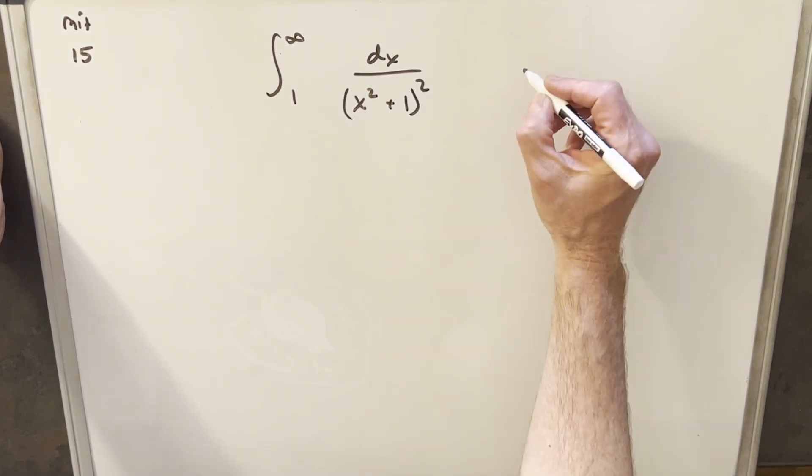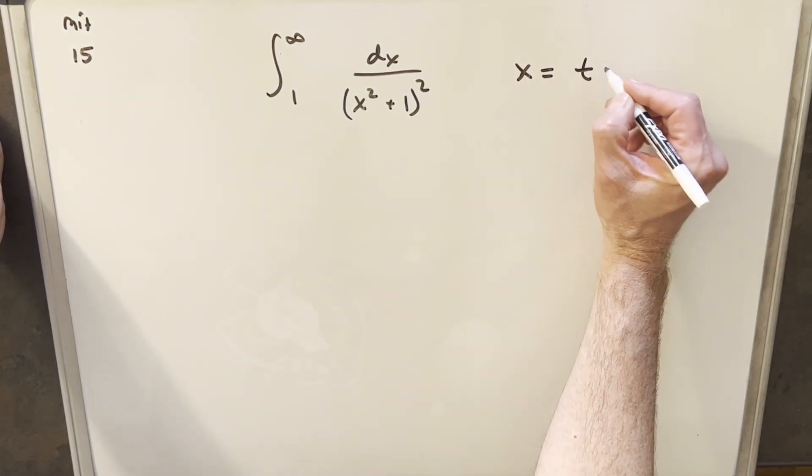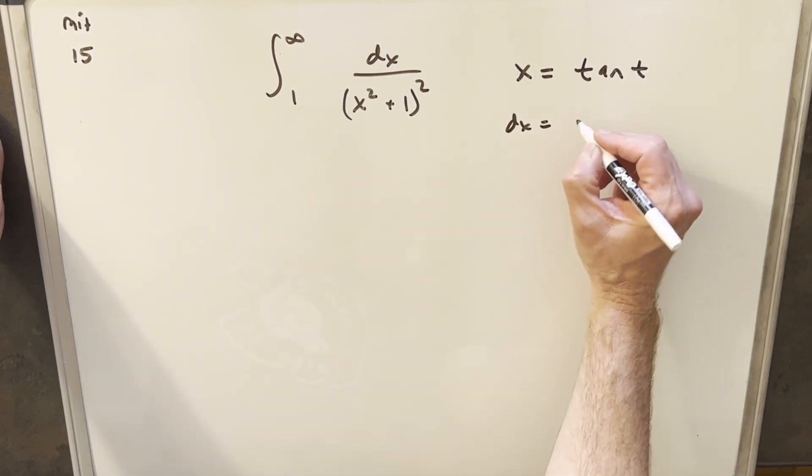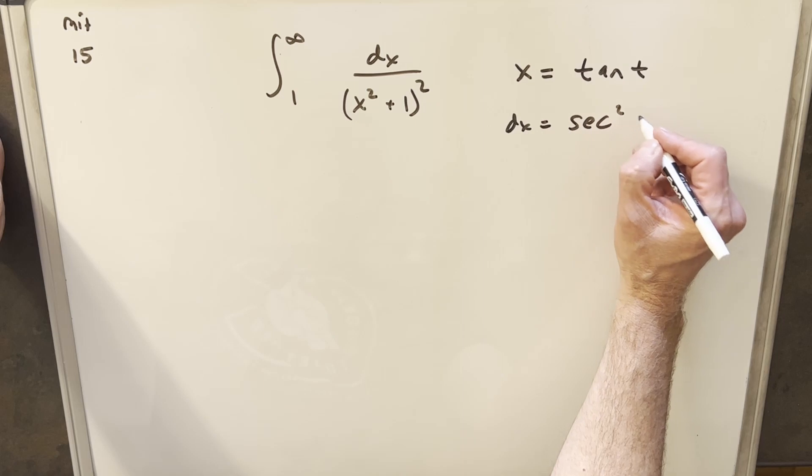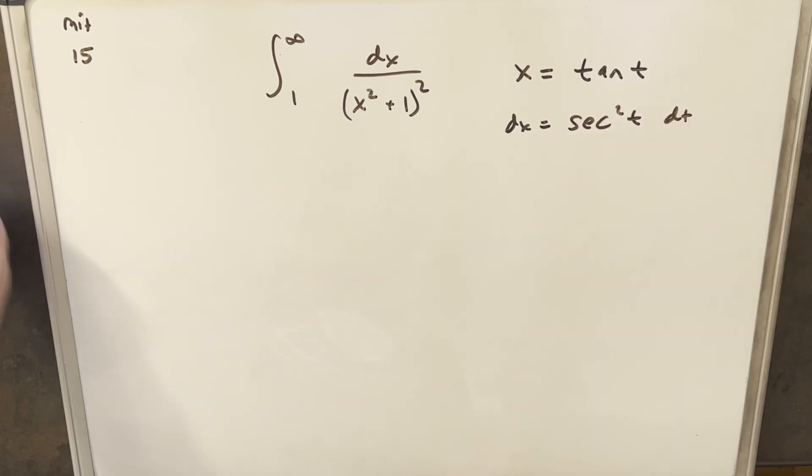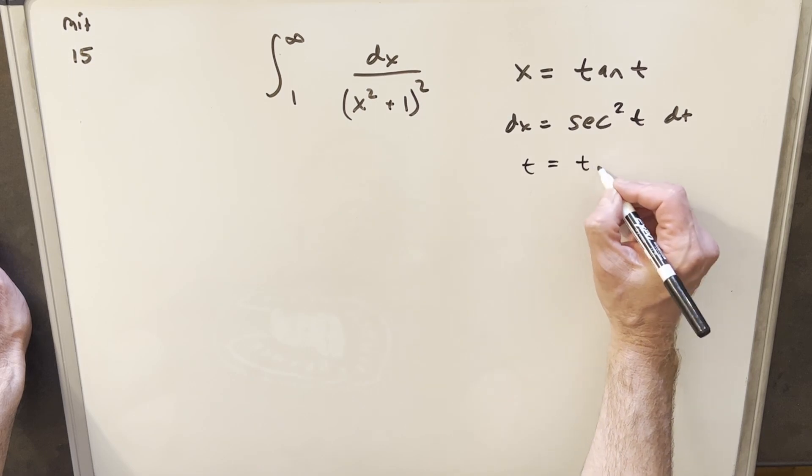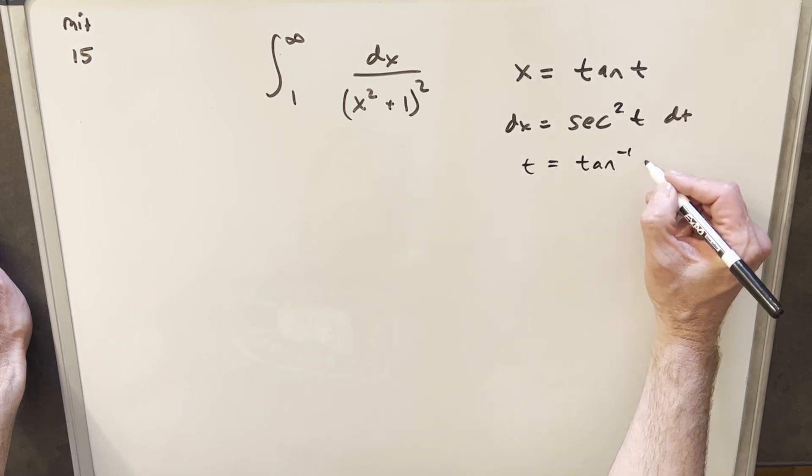What I'm going to do is call x equal to tan(t), and then our dx is going to be sec²(t) dt. We can also solve for t, so we can say t equals arctan(x).